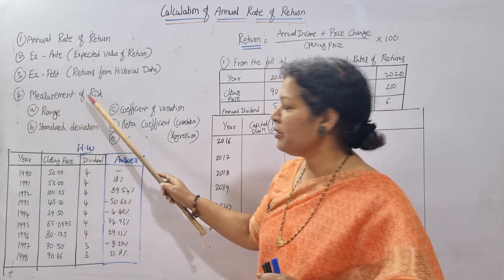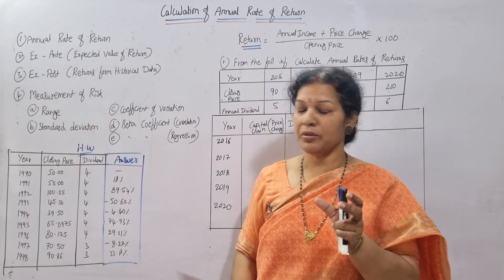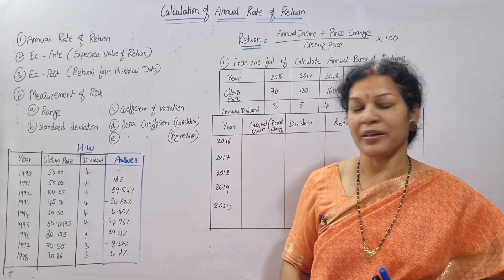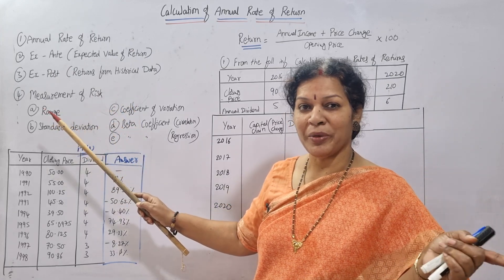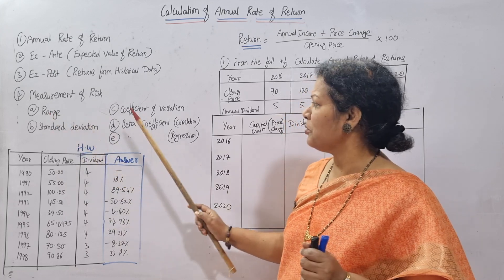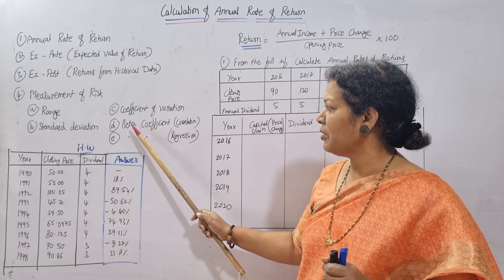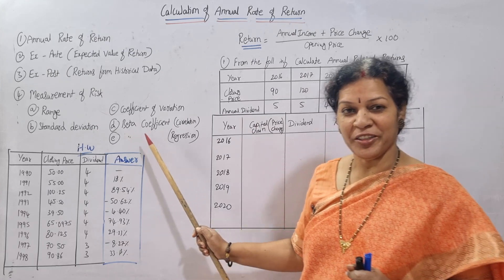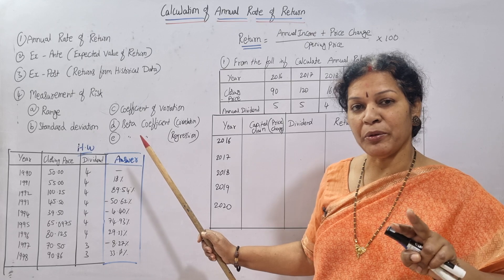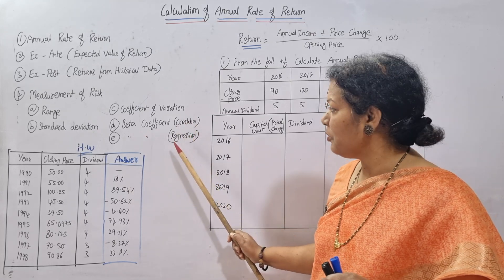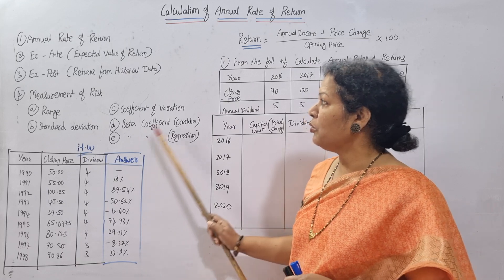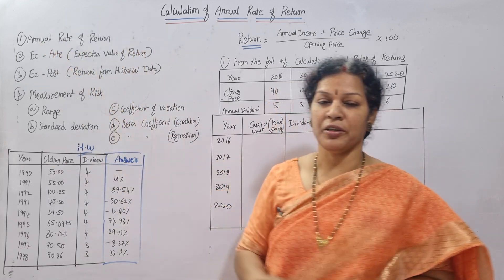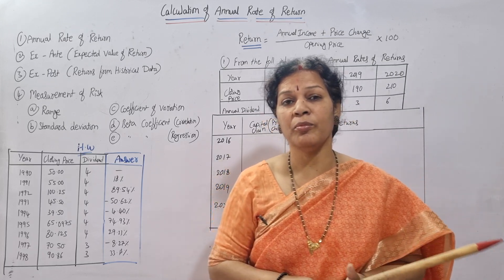The measurement of risk subtopics are taken from Statistics Part 1: range (highest value minus lowest value), standard deviation, coefficient of variation, and beta coefficient. Beta coefficient has two methods — one related to correlation and another related to regression. These are the main practical topics.